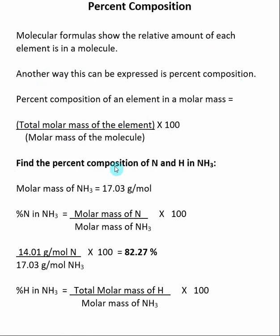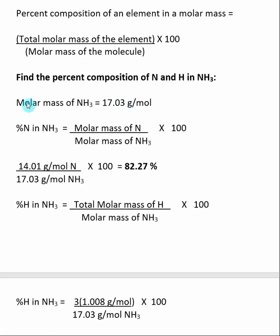Here I ask to find the percent composition of nitrogen and hydrogen in NH₃. The first thing we want to start with is finding the molar mass of NH₃. So I go to the periodic table and take the atomic weight of nitrogen and three times the atomic weight of hydrogen, and we get that the molar mass of NH₃ is 17.03 grams per mole.